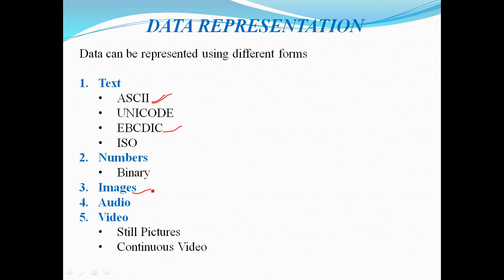Images are another form of data. They are also represented by bit patterns but with a different mechanism. The basic principle is an image is divided into a matrix of pixels, and each pixel is in the form of small dots.